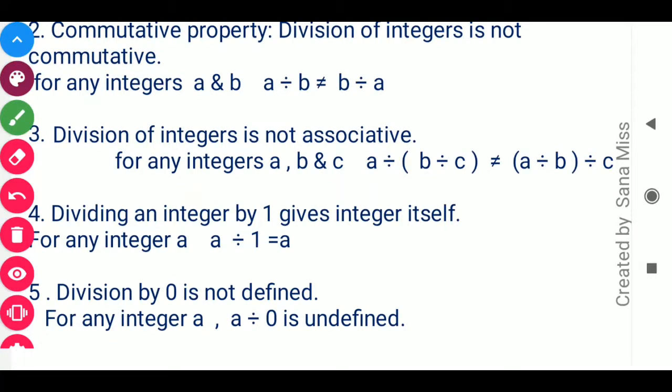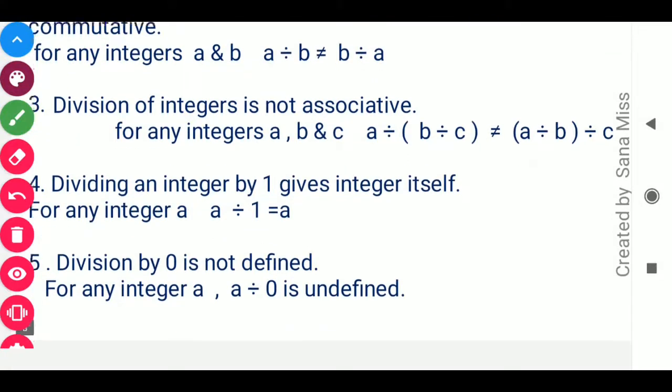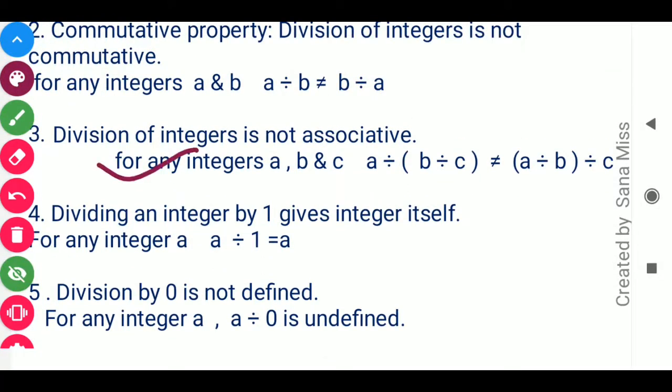Next, division of integers is not associative. Grouping also matters here. For any integers a, b, and c, dividing in any order may give a different result. Therefore, a divided by (b divided by c) is not equal to (a divided by b) divided by c — the LHS will not equal the RHS.